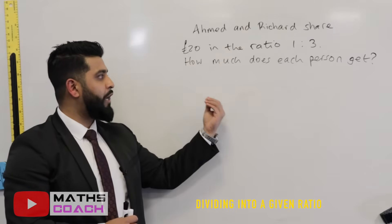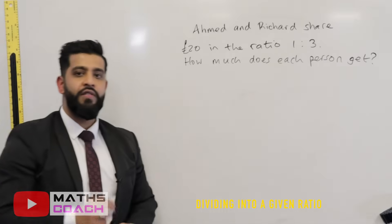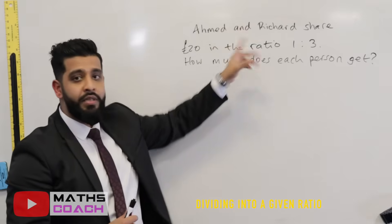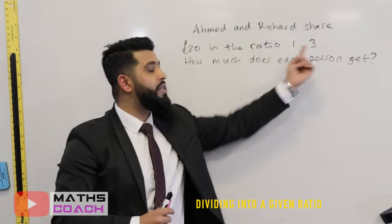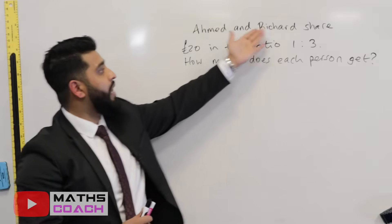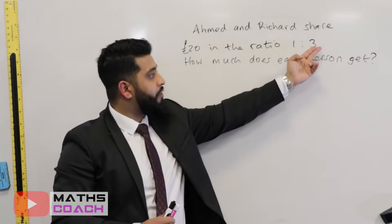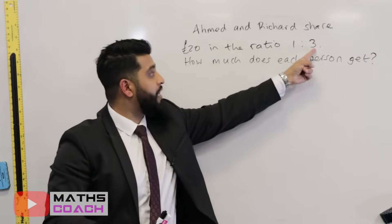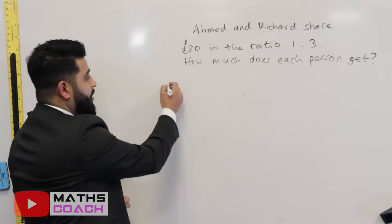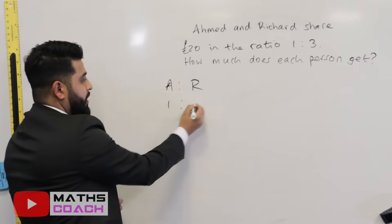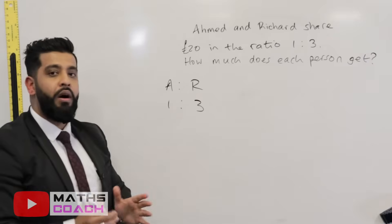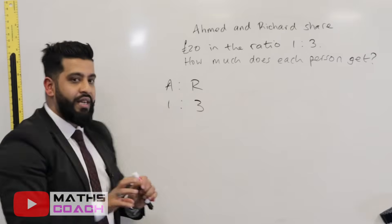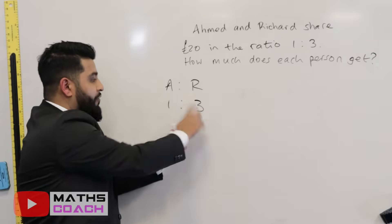...in the ratio one to three. How much does each person get? The first thing you have to be careful about is the order that the names appear in the question and the order the numbers appear. Ahmed and Richard — so the one and the three belong to them respectively. The one is for Ahmed and the three is for Richard. We'll write A and R with one to three.